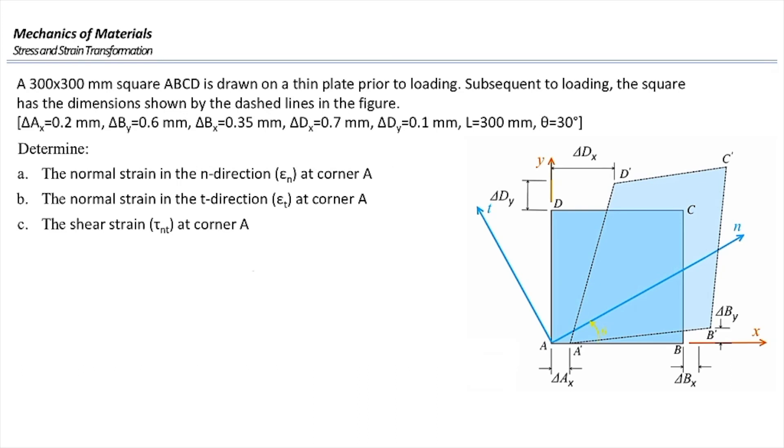One square ABCD, which has a dimension of 300 by 300 millimeter, is subjected to a loading that deforms the element as shown in the dashed line. We want to know if those deformations that are shown by delta AX, delta BX, delta BY, delta DX, and delta DY, how much would be the magnitude of normal strain and shear strain at corner A after rotating to the NT axis.